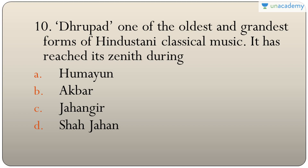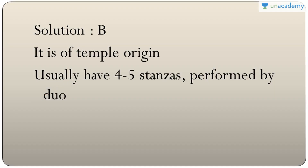Question ten: Dhrupad is one of the oldest and grandest forms of Hindustani classical music. It reached its zenith during the Akbar period. It is of temple origin, generally has four to five stanzas, and is generally performed by two people.